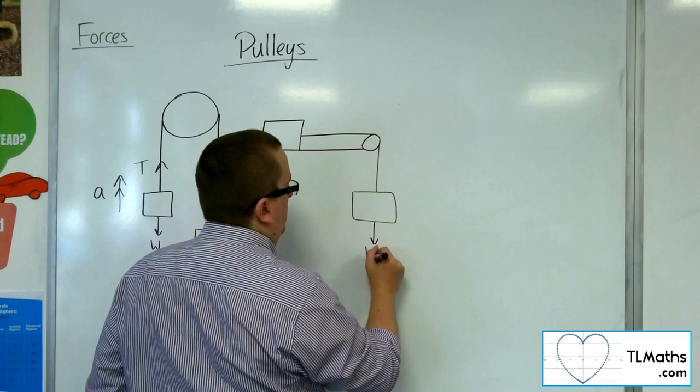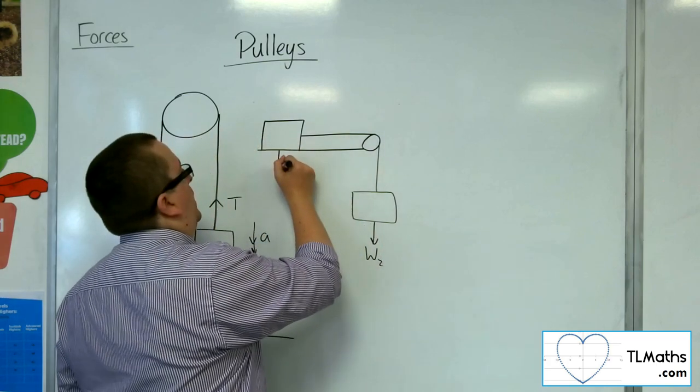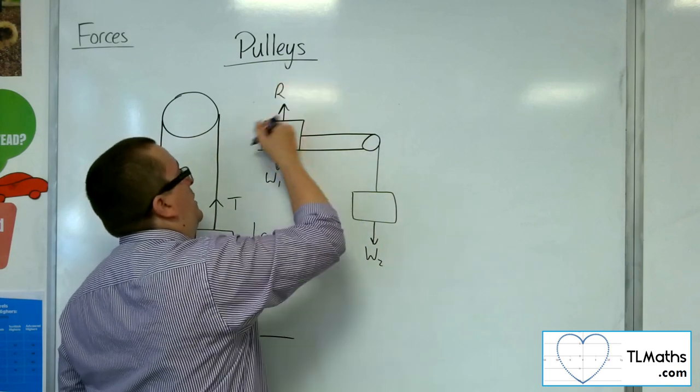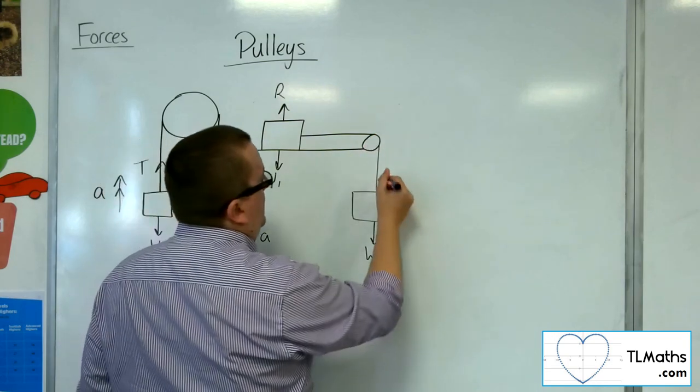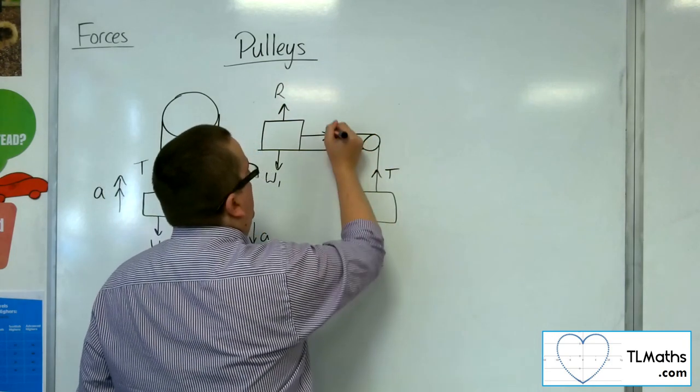And so what you then have to deal with is thinking, well, this one will have some weight, that will have weight working downwards, there will be a normal reaction force for this one because it's on the tabletop, there will be tension in the string here and here.